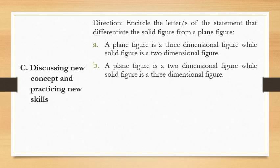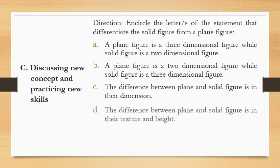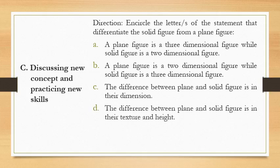For letter B, a plain figure is a two-dimensional figure while solid figure is a three-dimensional figure. For letter C, the difference between plain and solid figure is in their dimension. For letter D, the difference between plain and solid figure is in their texture and height.